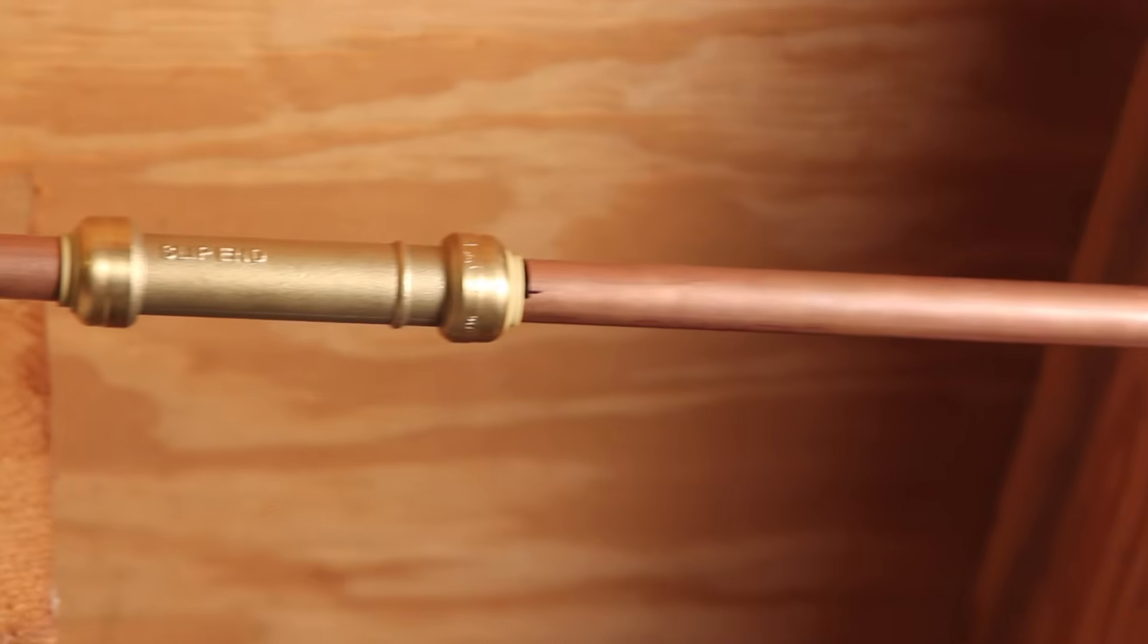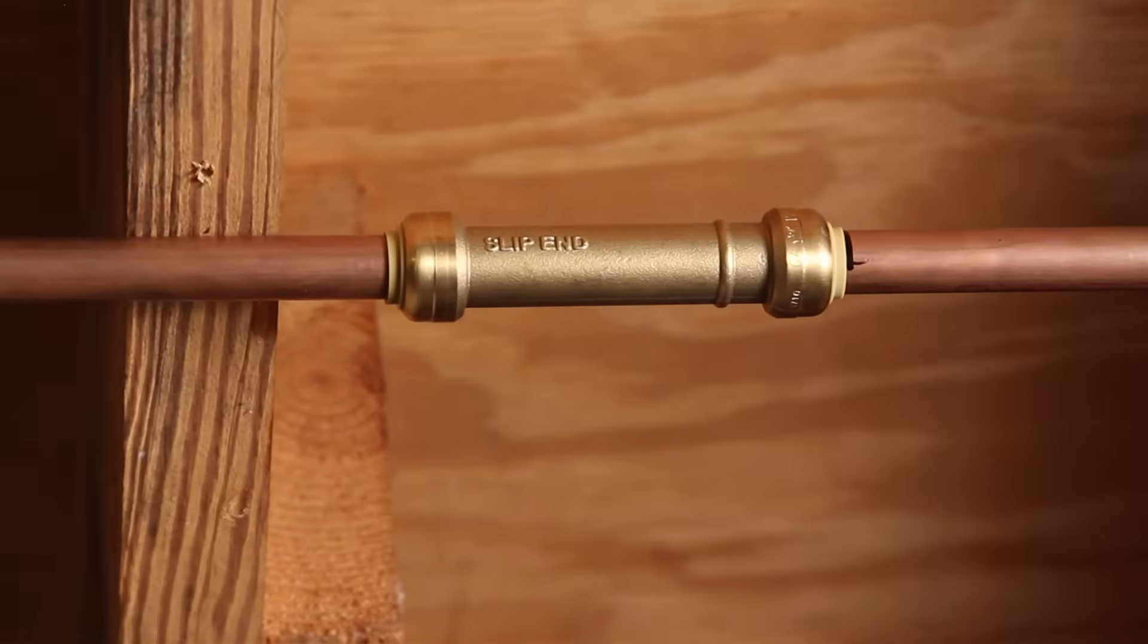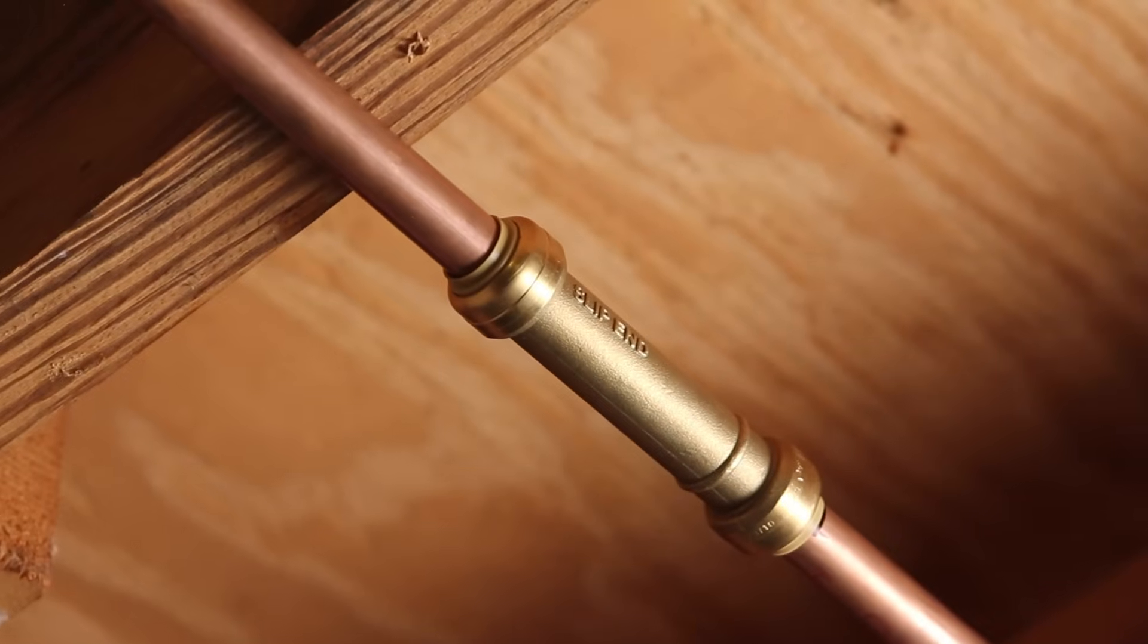You have now finished your repair and you can turn the water back on. Now you know how to repair a freeze brake in a half inch copper line using a SharkBite slip repair coupling.